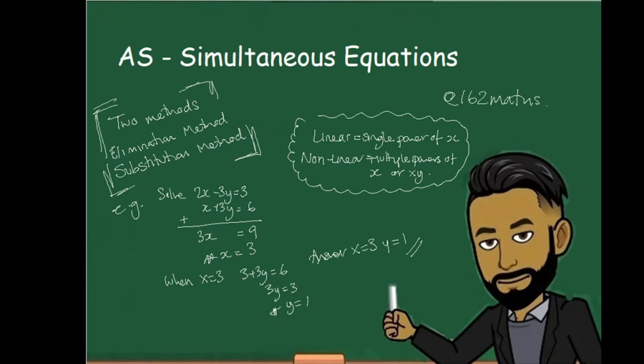At GCSE you would have probably covered this particular topic. However, when moving on to AS you might find yourself with more complicated equations. I will go through a method of solving two linear simultaneous equations — that's when you've got a single x and a single y — but I'm going to focus on the types of questions more likely at this level: one linear equation and one non-linear equation, usually in the form of a quadratic.